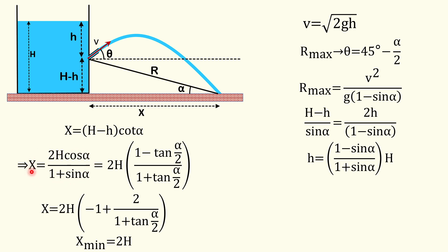We can apply the maxima-minima condition on this function, since x is expressed in terms of only one variable alpha, and alpha ranges from 0° to 90°. If we differentiate, dx/d(alpha) does not come out to zero for any value in this range — this is a decreasing function of alpha. We can also solve this algebraically: write cos α = cos²(α/2) − sin²(α/2), and write 1 + sin α = (cos(α/2) + sin(α/2))².